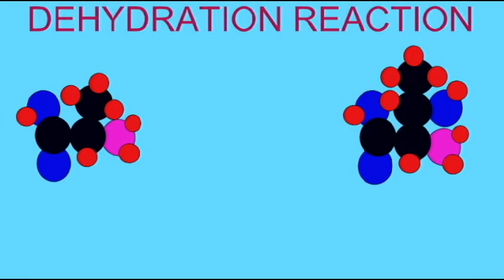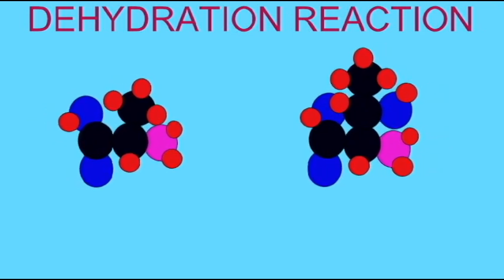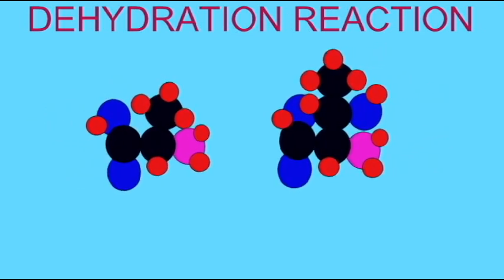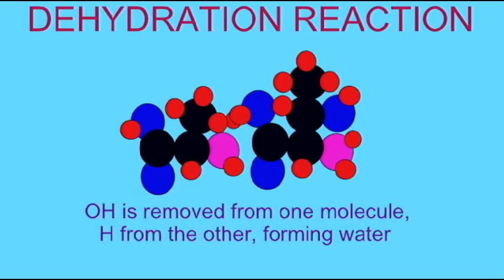When a dehydration reaction occurs between two amino acids, the OH is removed from one amino acid's acid group and a hydrogen is removed from the amino group of the second amino acid.